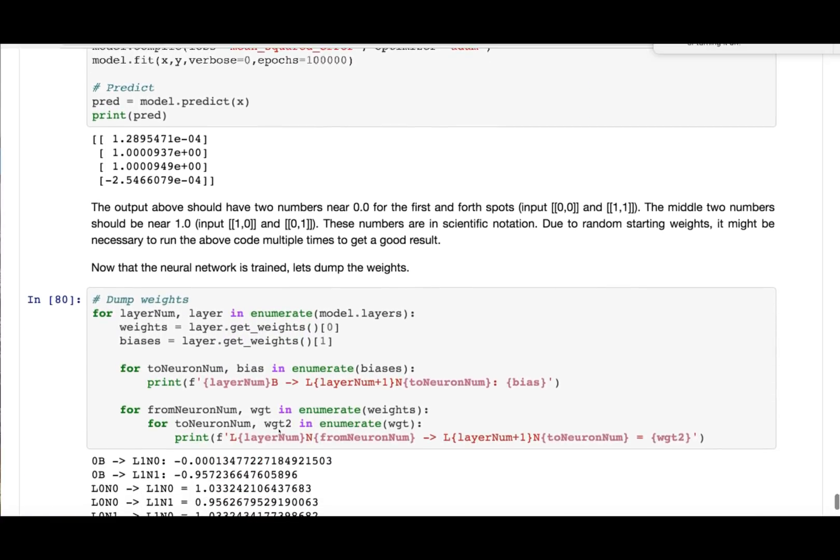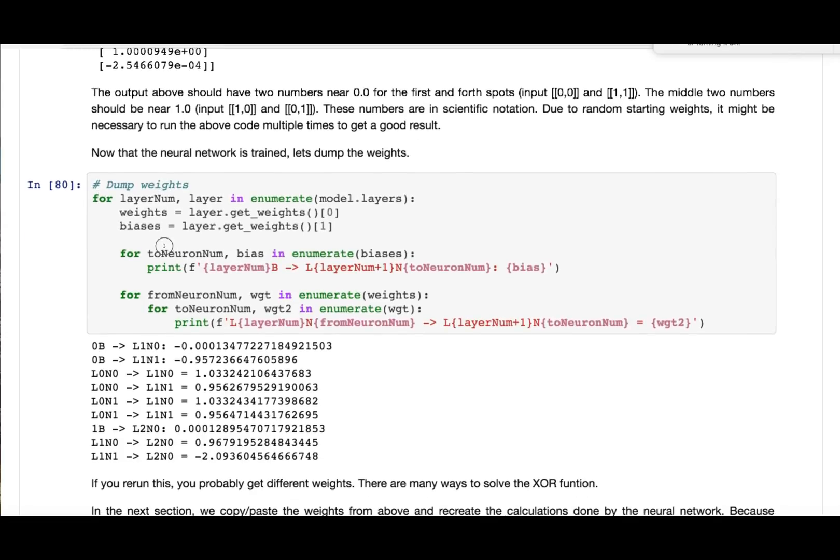So then what we're able to do is I wrote this little program here. This dumps the weights. So you're seeing that the layer zero counting starting at zero, the weight from the bias to the next layer, layer one. Again, we're counting with zero, neuron one, neuron, neuron zero, neuron one. These are the biases and these are the actual weights. So there's not a lot of weights and biases in this neural network. It's a fairly small one.